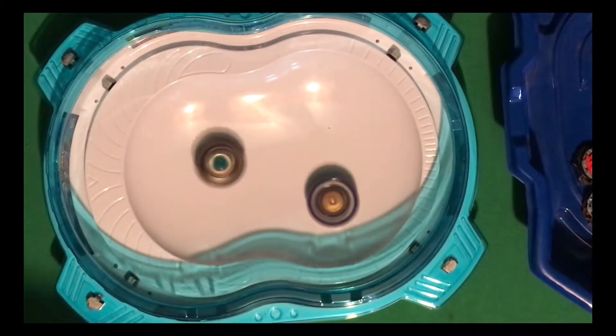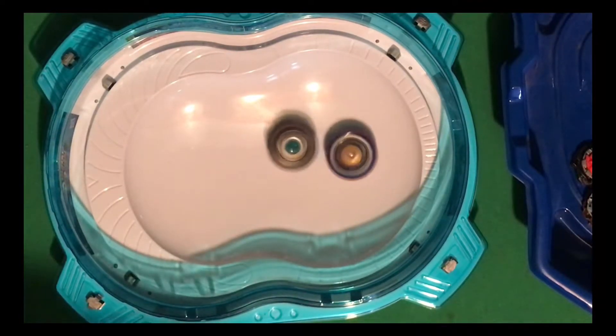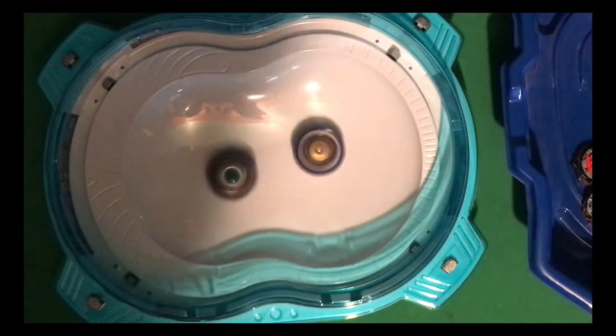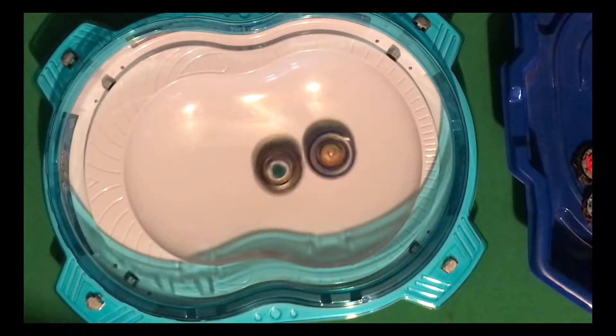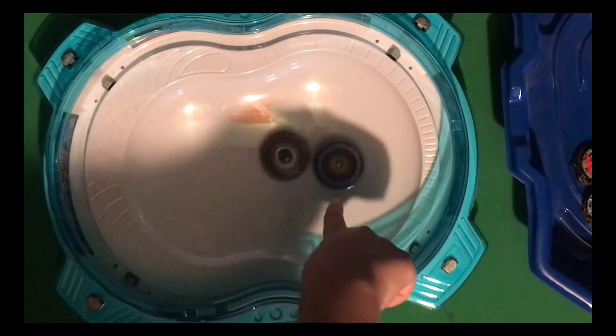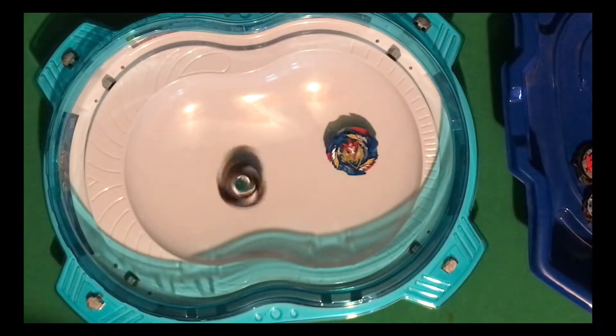There's four types of Beys: balance, attack, defense, and stamina. Attack beats stamina, stamina beats defense, and defense beats attack. Balance is balance. Drain Fafnir is a stamina type. The top part of that is attack, the bottom is defense.